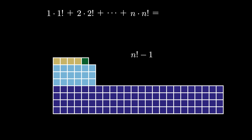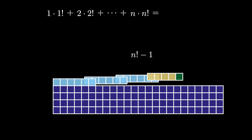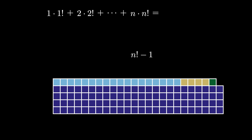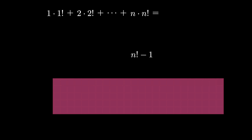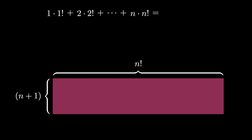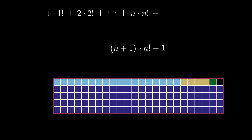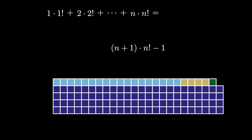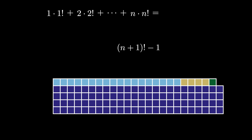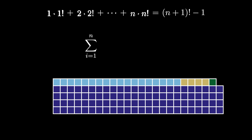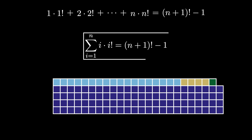We can use these to stack down on top of the final array, which is n by n factorial. But that means that this final rectangle is an n plus 1 by n factorial rectangle, and we're missing 1 square. So the total number of squares is n plus 1 times n factorial minus 1, which simplifies to n plus 1 factorial minus 1. Since we haven't removed any squares in the process, we see that the finite sum where i ranges from 1 to n of i times i factorial must equal n plus 1 factorial minus 1.